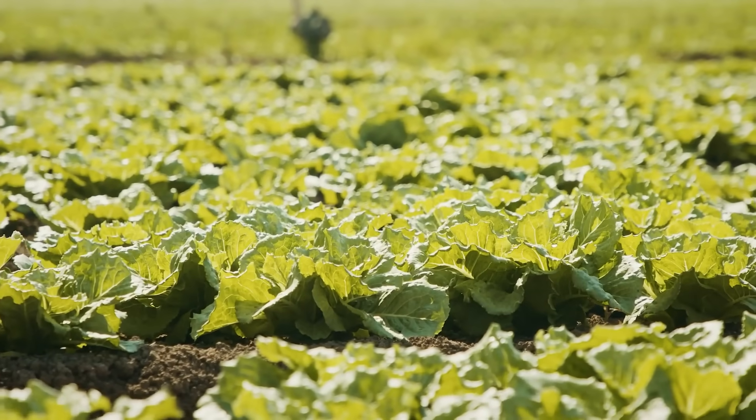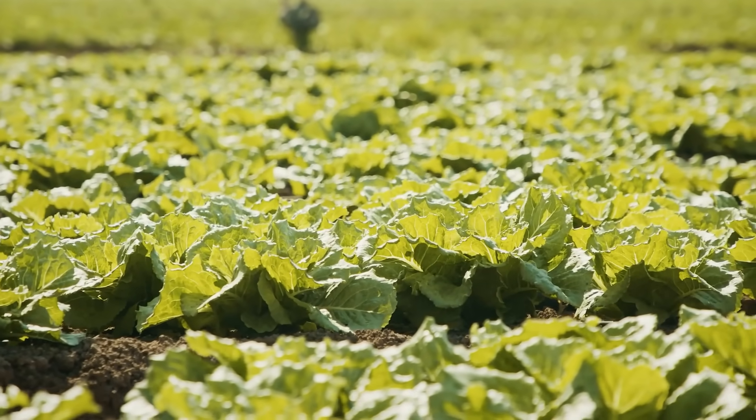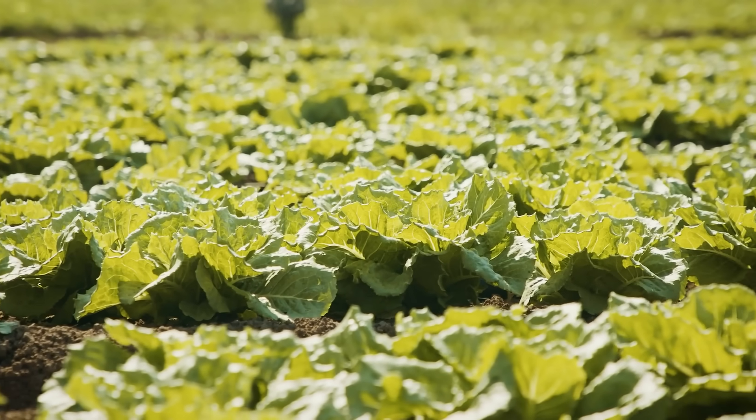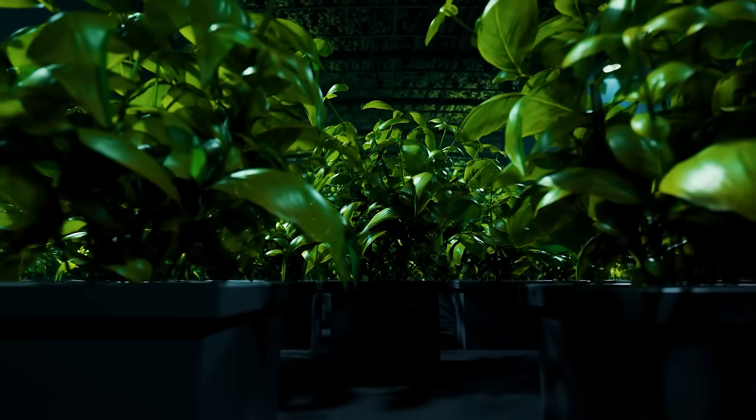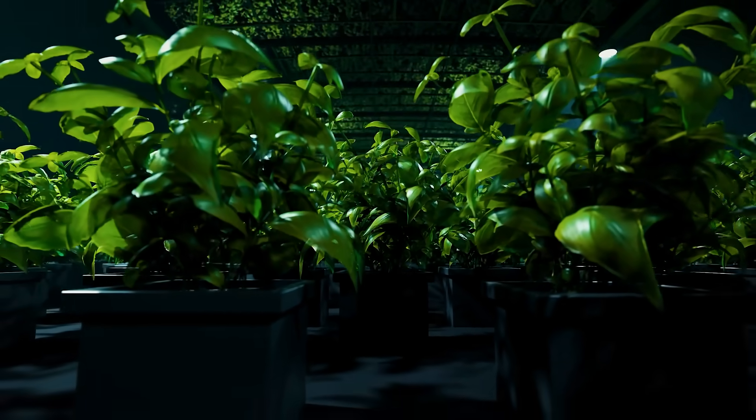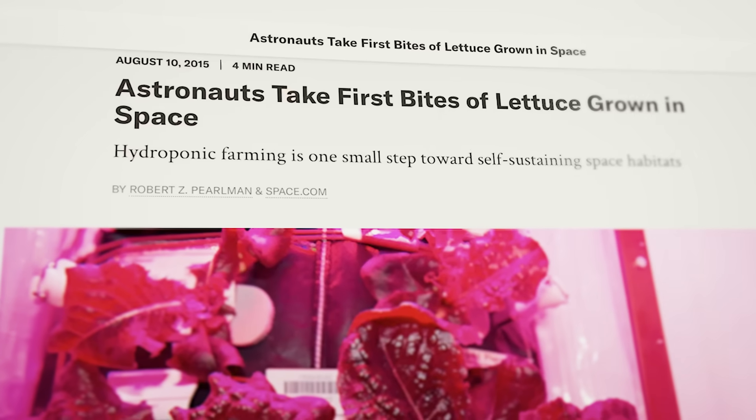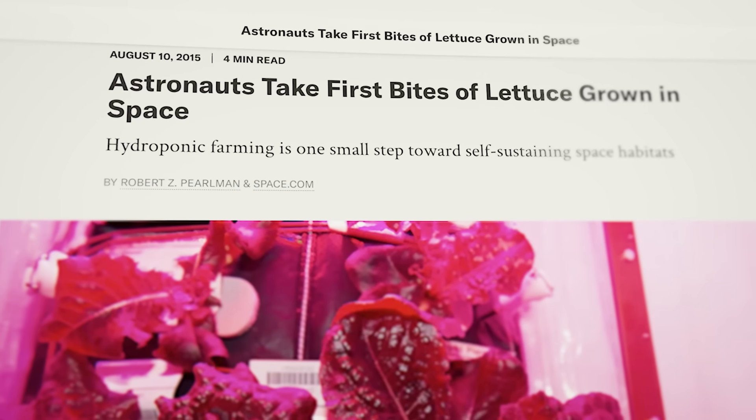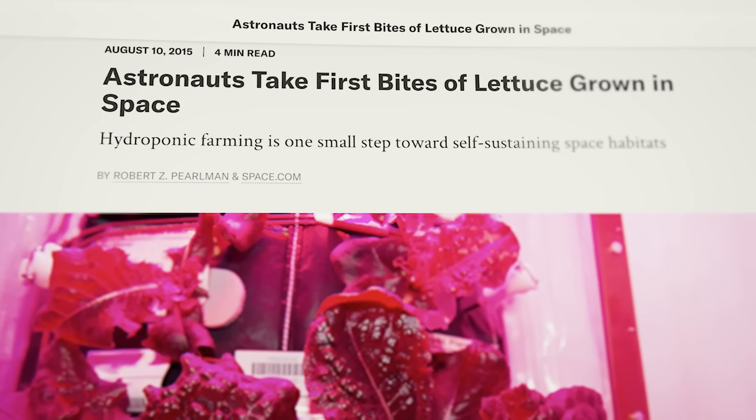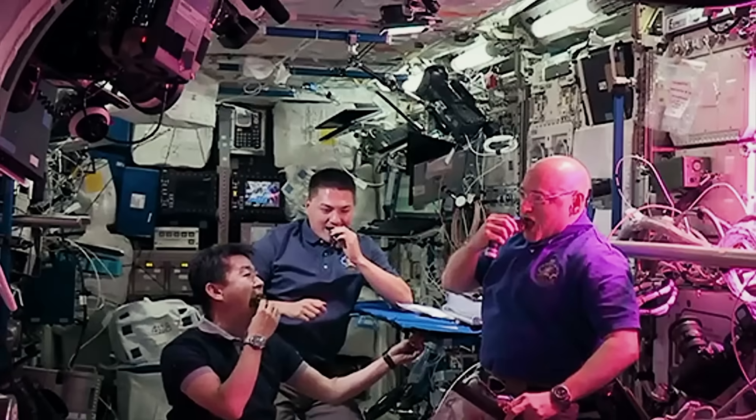They are also working on space agriculture, testing how crops like lettuce and mustard greens grow in orbit. Because if we are planning missions to Mars or beyond, astronauts will need to grow their own food. In 2015, ISS crew members harvested and ate the very first space-grown lettuce.